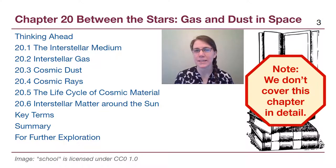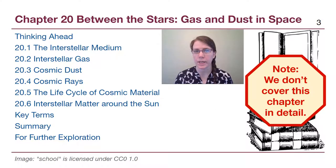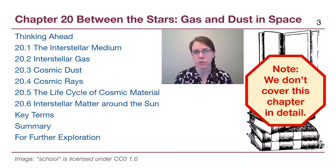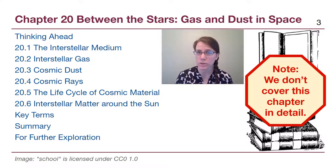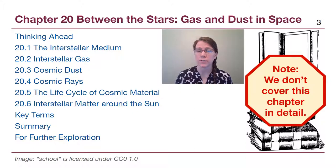Welcome to Module 5. In this module we are going to cover a series of chapters — chapters 20 through 24 in OpenStax Astronomy — that go through how stars form, how they live their lives, and how they die. As we get further into the textbook, what we will recognize is that we are covering fewer and fewer of the small details and focusing more and more on the big picture connections between the key concepts. This is because we're in a survey course of introductory astronomy.